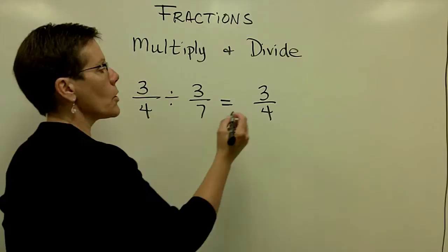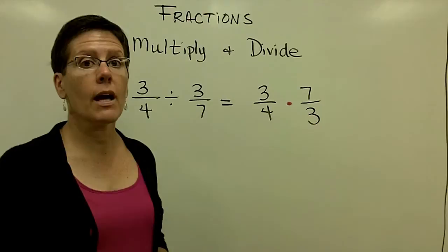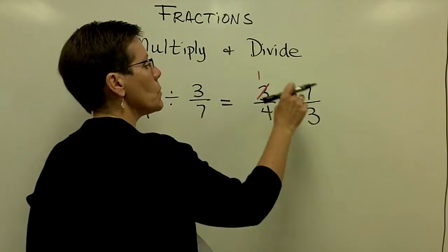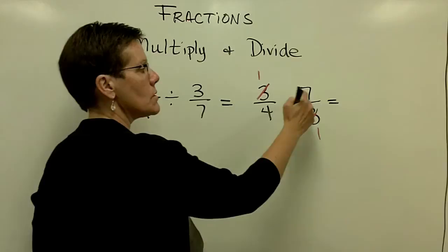So again, you take your first fraction, 3 fourths, and you multiply by the reciprocal of the second fraction. And now you go back to reducing in the event that there's a common factor in the top and on the bottom of those fractions. And I notice that a 3 goes into here once and a 3 goes into here once. And I'm left with, in the numerator, 1 times 7 is 7 and 4 times 1 is 4. 7 fourths or 1 and 3 fourths.